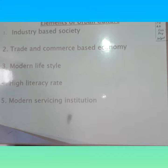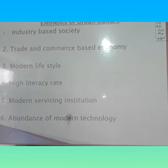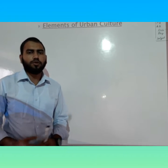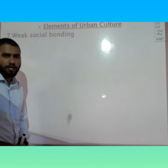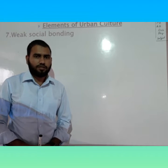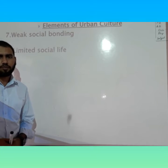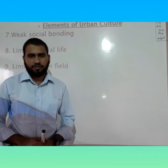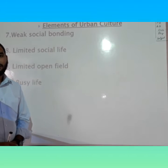Number five, modern servicing institutions — in urban areas there are more modern servicing institutions. Number six, abundance of modern technology — urban people use modern technology and tools. Number seven, weak social bonding — this is a negative element of urban areas. Number eight, limited social life. Number nine, limited open fields. Number ten, busy life — urban people's life is busy.